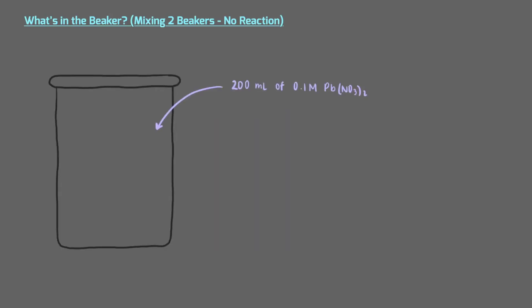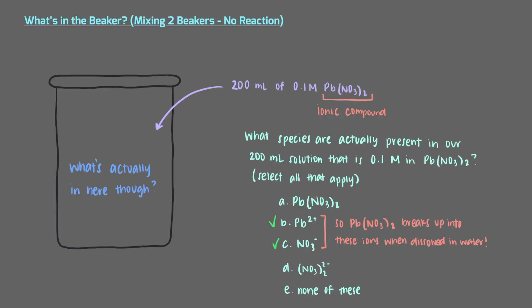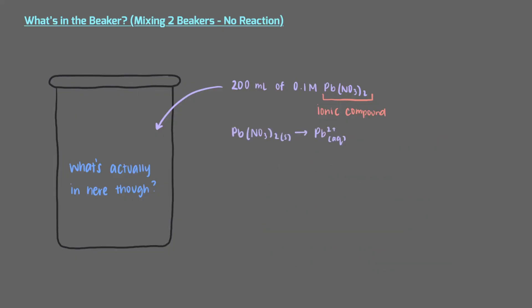In this first beaker, we have 200 milliliters of a 0.1 molar lead nitrate solution. What species are actually present in our 200 milliliter solution that is 0.1 molar in lead nitrate? Lead nitrate is an ionic compound and it's soluble, like all nitrate compounds. So when it was dissolved in water to make the solution, it would have broken up into ions. When lead nitrate dissolves in water, it makes lead ions and nitrate ions.